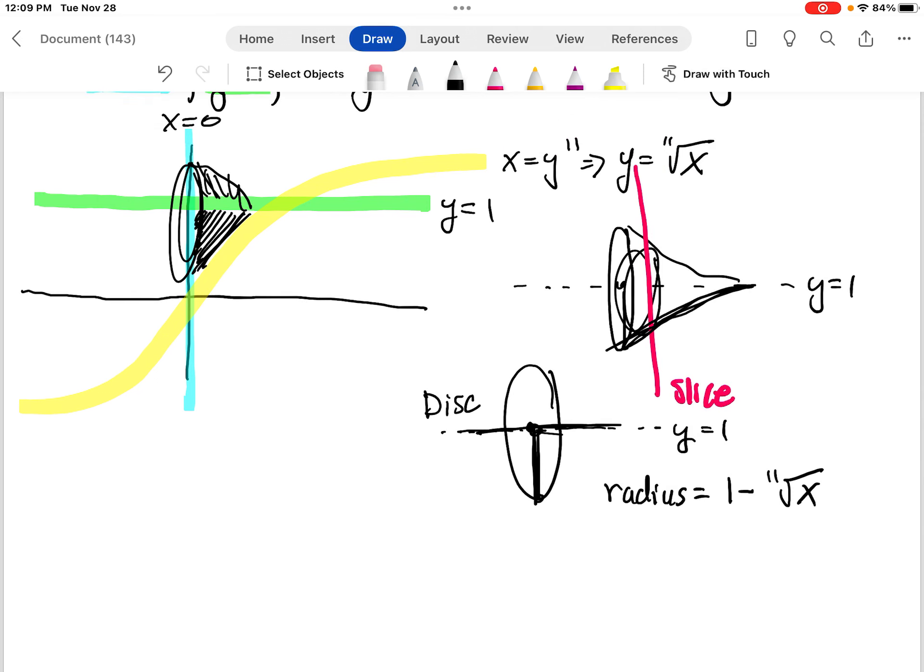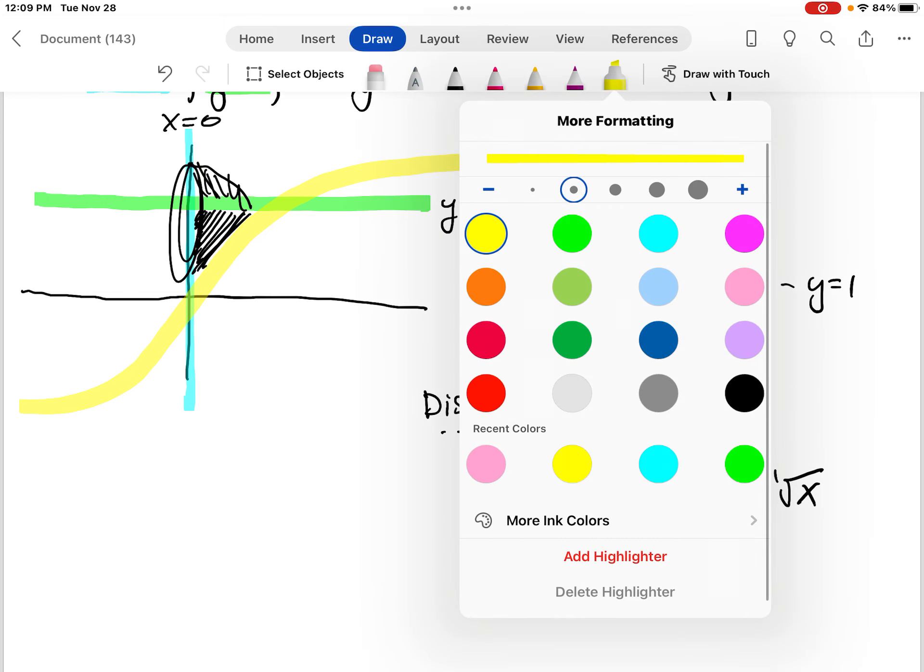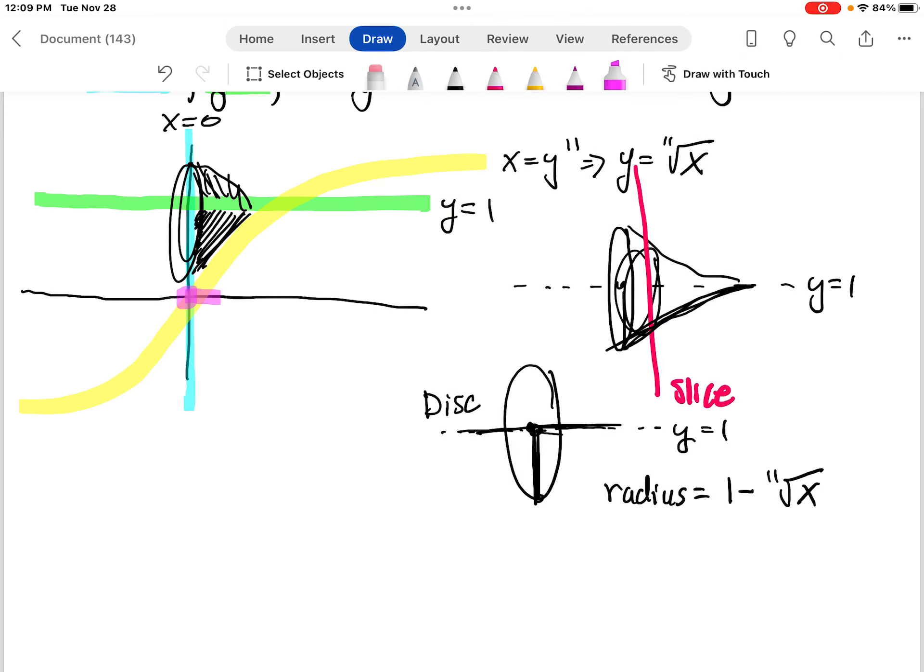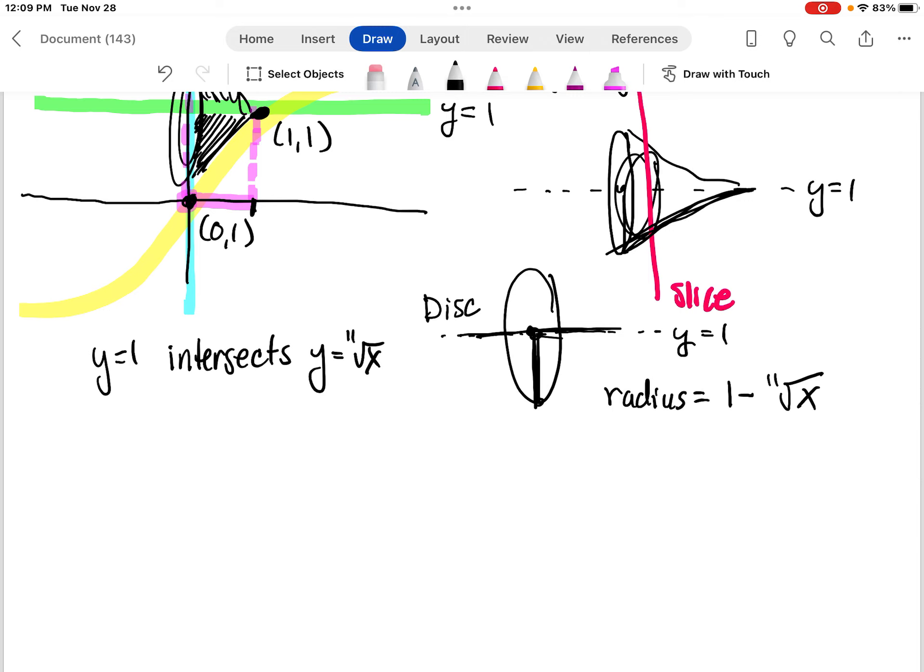So when we integrate this, we need to know what our limits are. Since we're doing this in terms of x, it's going to go from here to here. So we know that this point is 0. This point would have to be 1 because it's where these two intersect. So where y equals 1 intersects y equals the 11th root of x, this point right here has to be (0,1). So we're going to integrate this with a lower limit of 0 and an upper limit of 1.